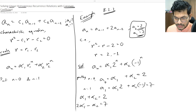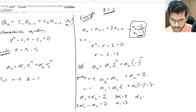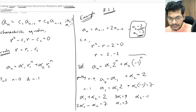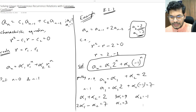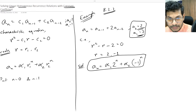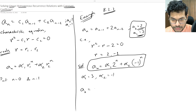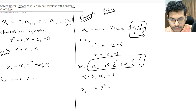Solving the system by addition: adding both equations gives 3α₁ = 9, so α₁ = 3. Substituting back, α₂ = 2 - 3 = -1. Therefore the final closed-form solution is: a(n) = 3·2ⁿ + (-1)·(-1)ⁿ = 3·2ⁿ - (-1)ⁿ.